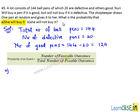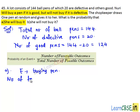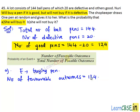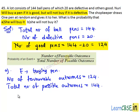Let's see part A. We need to find the probability that Nuri will buy the pen. Let E be the event of buying the pen. We know that Nuri will buy a pen if it is good, so we need to find the probability of selecting good pens from a lot of 144 ball pens. Number of favorable outcomes equals number of good pens, which is 124. Total number of possible outcomes equals total number of pens, that is 144. Then P(E) equals 124 divided by 144.